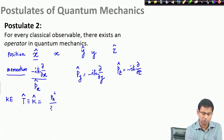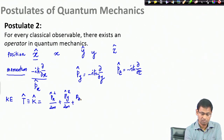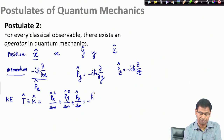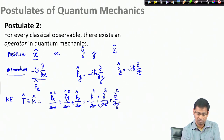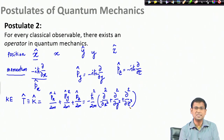Expanding, the kinetic energy operator is p-hat_x squared over 2m plus p-hat_y squared over 2m, and so on, which when solved gives the full expression for the kinetic energy operator.